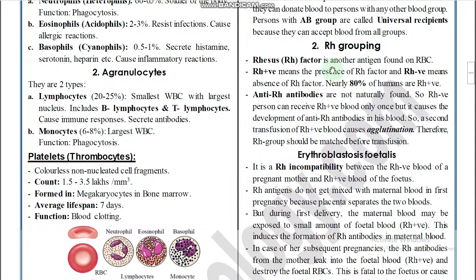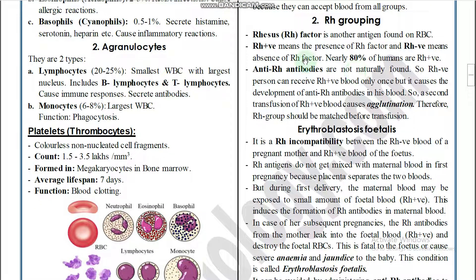Apart from the ABO system, there is also the RH blood group system, based on the presence or absence of antigen D on the surface of RBCs. If antigen D is present, the person is RH positive; if absent, RH negative. Nearly 80% of humans are RH positive.